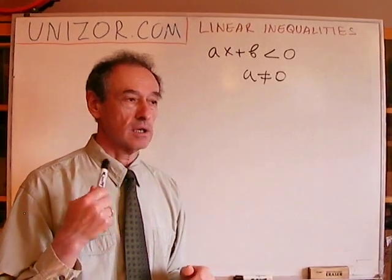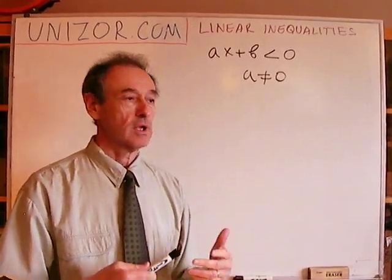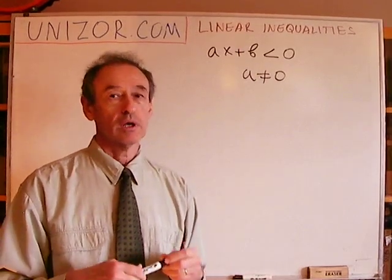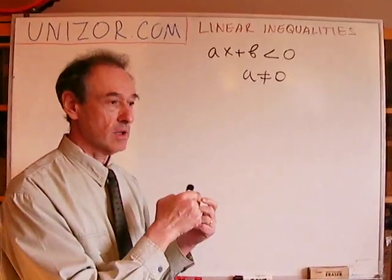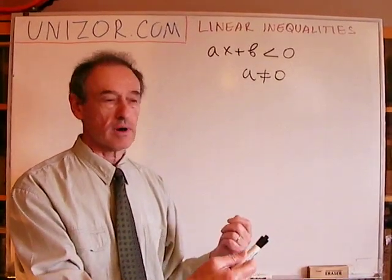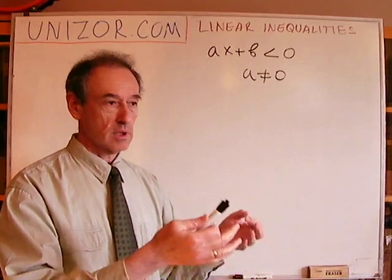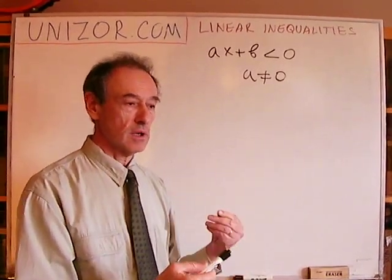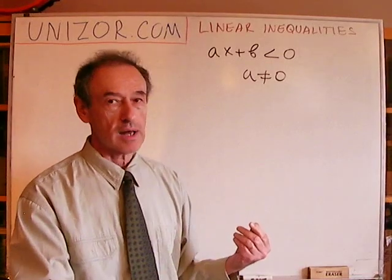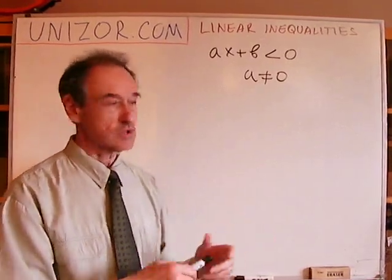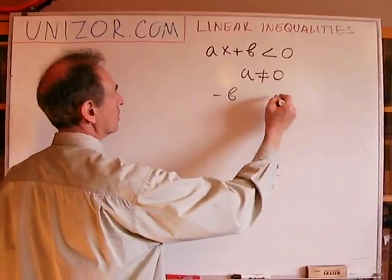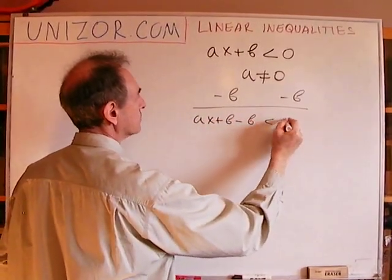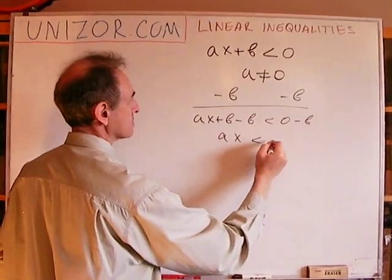Adding any number — positive, negative, or zero — to both sides of an inequality is an invariant transformation, and the sign of inequality is retained. If one number is less than another and you add something to both sides, the relationship is preserved. So if I add minus b to both sides, I get ax plus b minus b less than zero minus b, which is ax less than minus b.